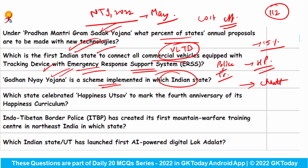Which state celebrated Happiness Utsav to mark the 4th anniversary of its happiness curriculum? The answer is Delhi.